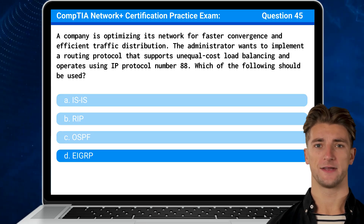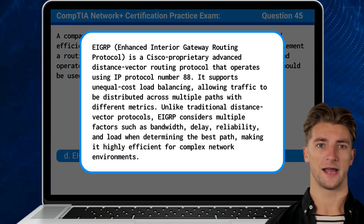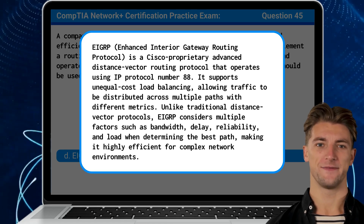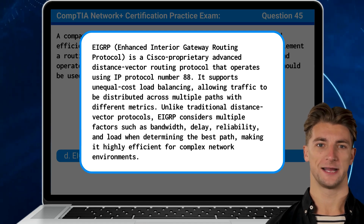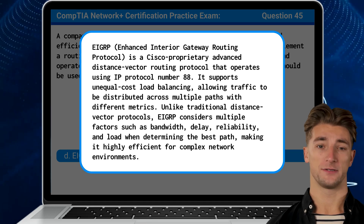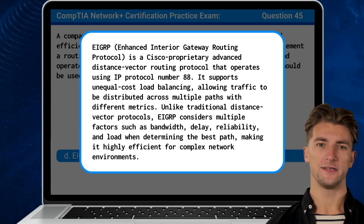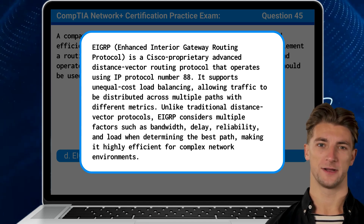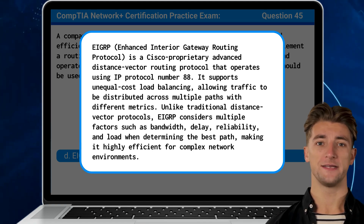The answer is D. EIGRP, or Enhanced Interior Gateway Routing Protocol, is a Cisco proprietary advanced distance vector routing protocol that operates using IP protocol number 88. It supports unequal cost load balancing, allowing traffic to be distributed across multiple paths with different metrics. Unlike traditional distance vector protocols, EIGRP considers multiple factors such as bandwidth, delay, reliability, and load when determining the best path, making it highly efficient for complex network environments.